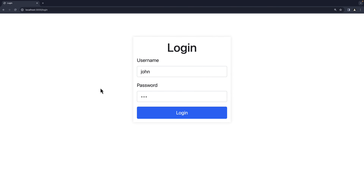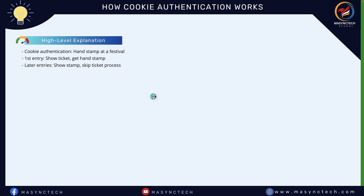Cookie authentication is like getting a hand stamp when you go to a festival. The first time you enter, you show your ticket, and in return you get a stamp on your hand. The next time you want to enter, you simply show the stamp instead of going through the whole ticket process again.